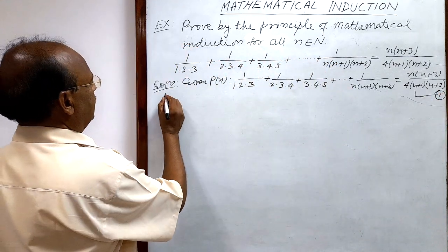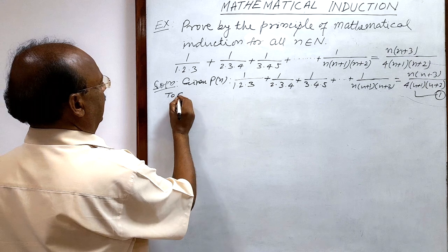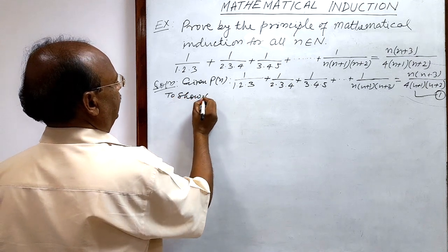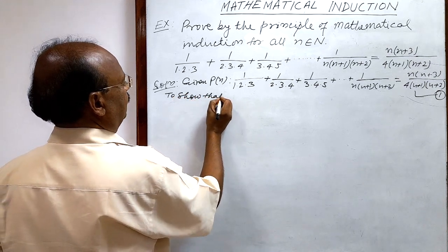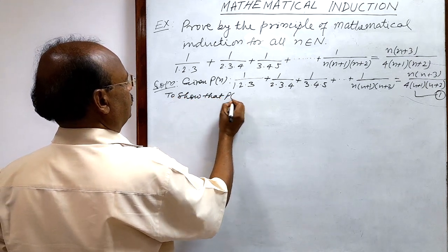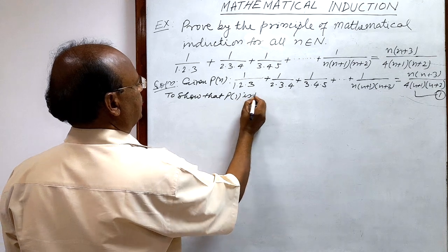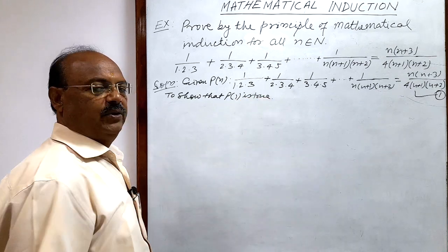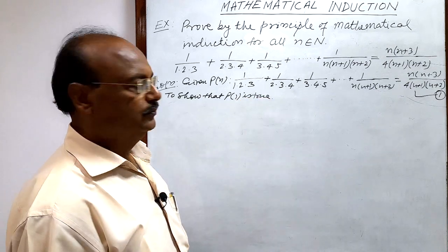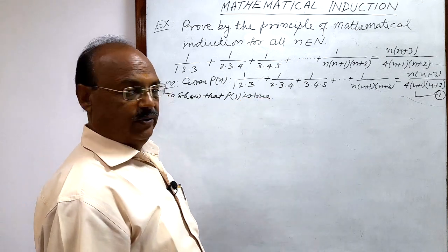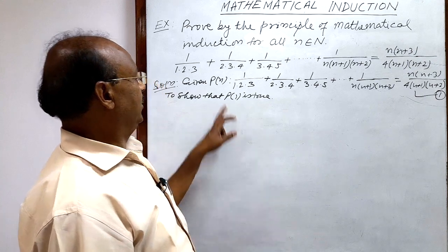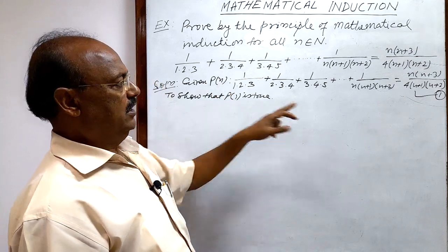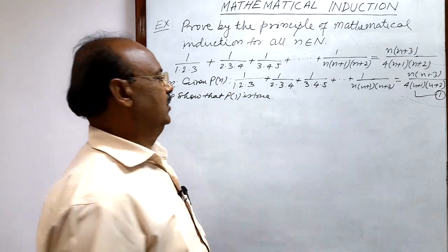In the first step, we have to show that P(1) is true. We get P(1) by putting n = 1 in relation number 1.